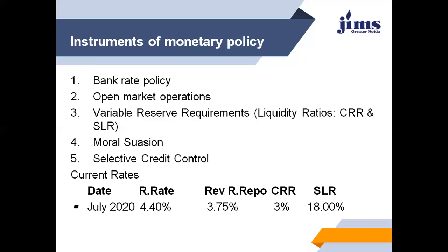The Reverse Repo Rate, Repo Rate, CRR, and SLR figures shown here are for July 2020. All the ratios are at a very low level because, due to COVID-19, the government is trying to bring things back to normal. Easy loans have been provided and the RBI has allowed commercial banks to keep low amounts of reserves so that they can lend more.